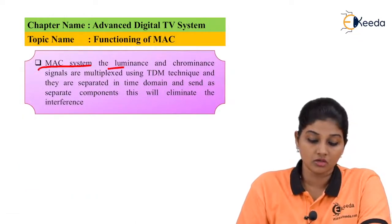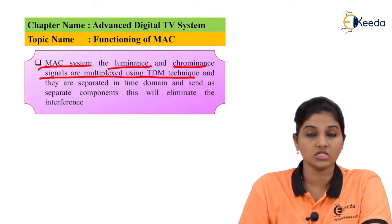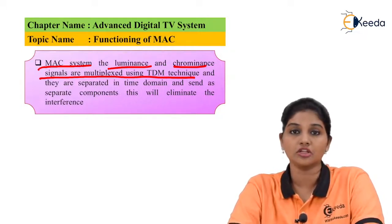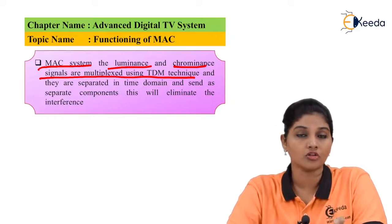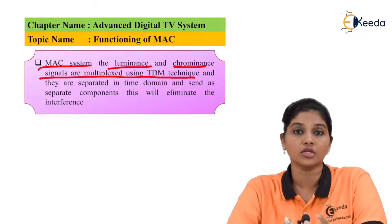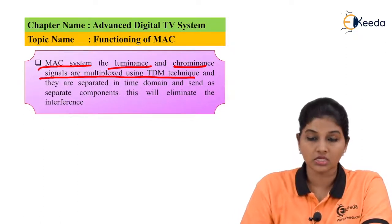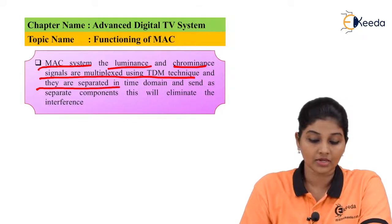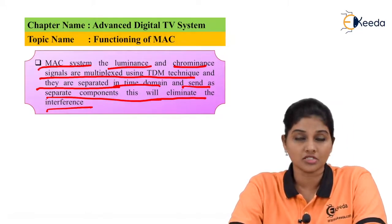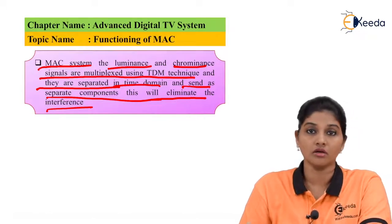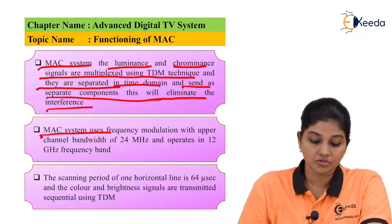In the MAC system, luminance and chrominance signals are multiplexed using TDM — Time Division Multiplexing — rather than Frequency Division Multiplexing. A particular time slot is allotted for a particular signal. The luminance and chrominance signals are separated in the time domain and sent as separate components. This eliminates interference, as the signals are transmitted separately and multiplexed using TDM, making it easier to separate them at the receiver.